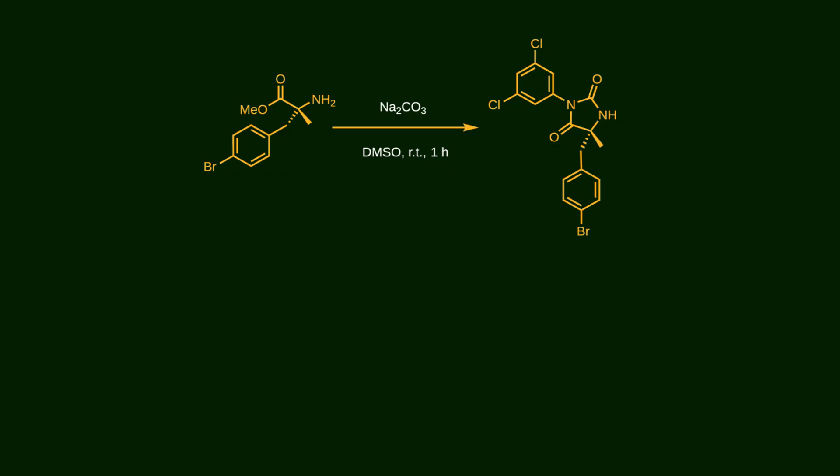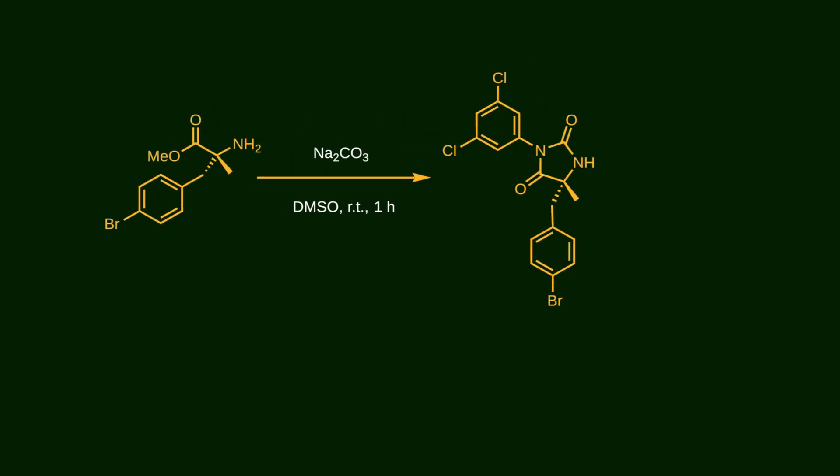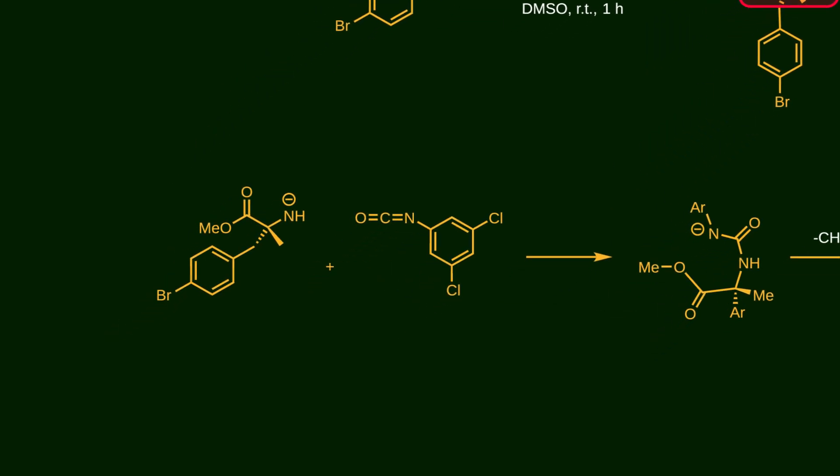In the next step, the main skeleton of our target is almost complete. Let's have a look at the product. In fact, to recognize the former nitrogen and the ester group, if we track the aromatic substituent, you will see that this came from the former nitrogen atom and this is the carbonyl ester group. So, this new part has just been installed. To build this new part and complete the 5-membered ring known as hydantoin, the amino acid ester reacts with an isocyanide that has a dichloroaromatic substituent.